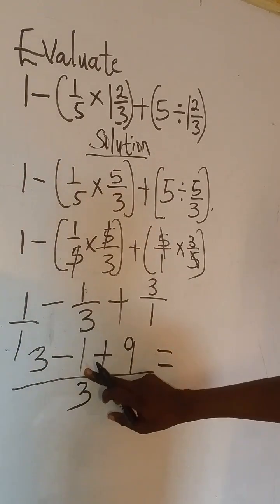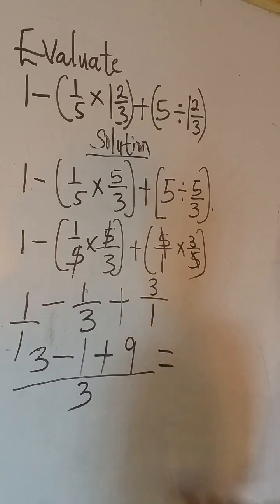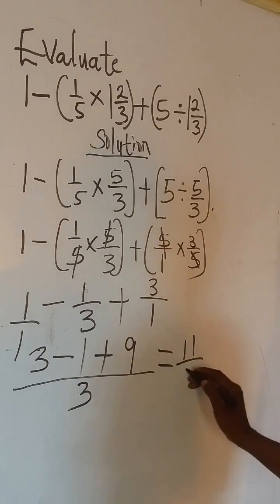We now have 3 minus 1 is 2. 2 plus 9 is 11 over 3.